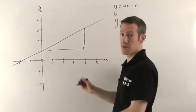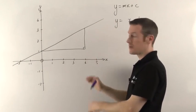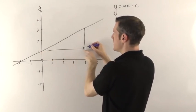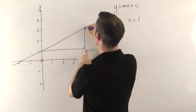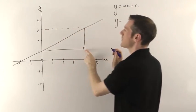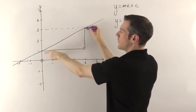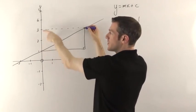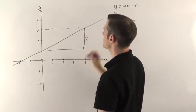For the height, well it starts off at 1 and it goes up to, what's that, about 3? Yeah, I think that's 3. So the height from 1 up to 3, that means it has a height of 2. The difference between 1 and 3 is 2, so the height of that triangle is 2.